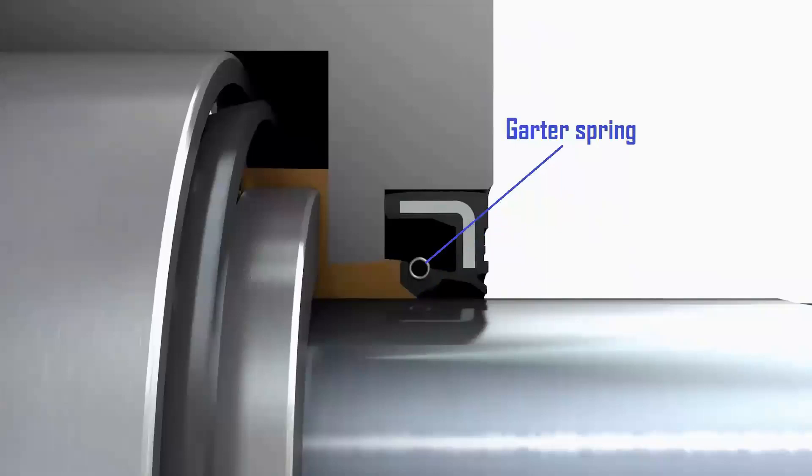At the top of the seal lip edge there is a garter spring which is a spring that extends in the form of a ring around it. The function of the garter spring is to press the seal lip edge so that it always presses firmly on the shaft so that there is no gap that allows lubricant or fluid to leak out.